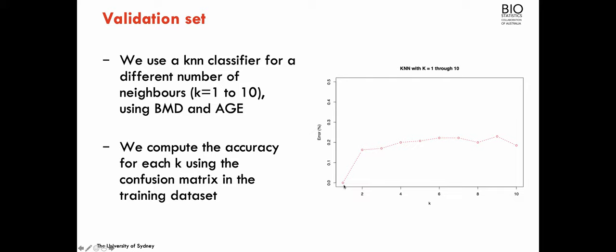On the right side, I've represented the percentage of error depending on the number of neighbors. For k equals 1, I'm classifying each individual according to their fracture status, so I have 0% error because I'm completely overfitting the data. If I chose two neighbors in this training dataset, I would get about 16% error. If I had to choose the best k based on these results, it would be k equals 1 — but I'm overestimating performance since I'm using the same data used to fit the model.